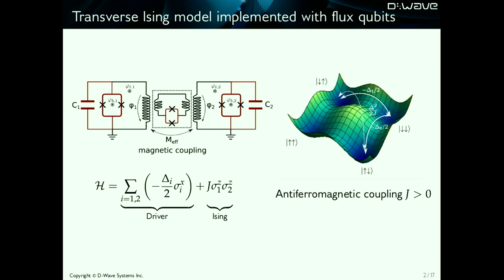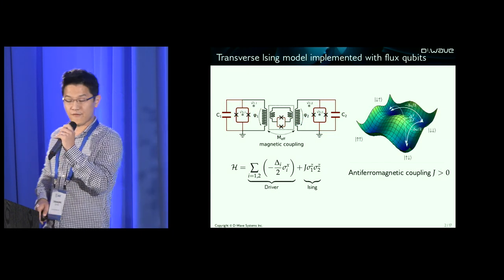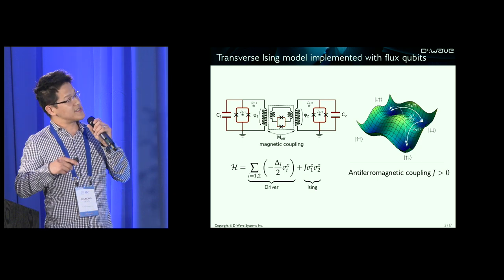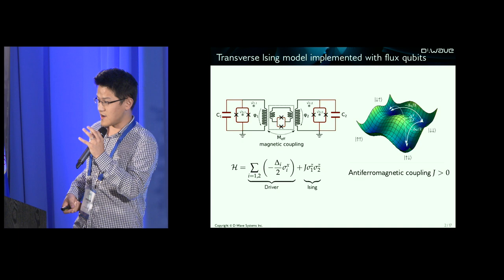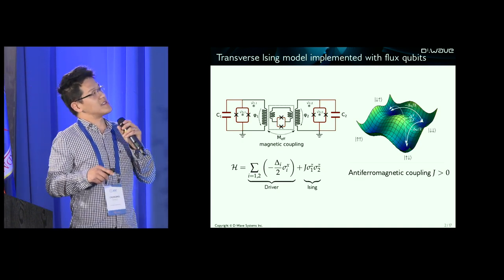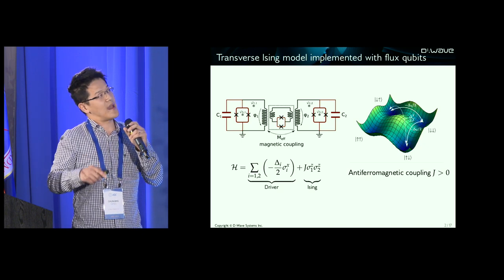Let me spend a few minutes to explain how we implemented the transverse Ising model in D-Wave. Many of you may already be familiar with this circuit diagram where we have a superconducting flux qubit implemented with two control loops. One makes the double-well barrier height tunable and the other makes the double-well tilt tunable. With a tunable magnetic coupler, we implement couplings between the two flux qubits. The transverse Ising model written in this form represents this coupled system. Inside this Hamiltonian we have an Ising term given by sigma ZZ, and we have a driver Hamiltonian which is the sum of sigma X, giving us single-qubit tunneling.